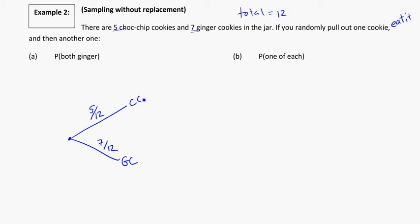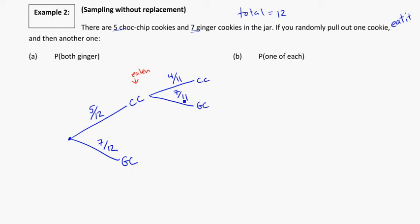If I get a chocolate chip on the first go around, my next possibilities are still chocolate chip or a ginger cookie. But I've eaten one chocolate chip cookie, which means I have one less — so I have four chocolate chip cookies, and one less cookie total, making it four out of eleven. Because my first cookie was a chocolate chip, the number of ginger cookies stays the same — I still have seven out of the eleven left.